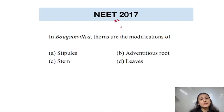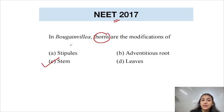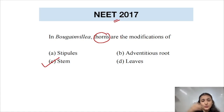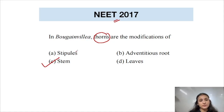From NEET 2017: Thorns are modifications of stems. The stems reduce themselves into hardened, pointed structures that have lost the ability to grow further. These protect the plants from grazing animals and help reduce transpiration. Options A, B, and D are incorrect; option C is the correct answer.